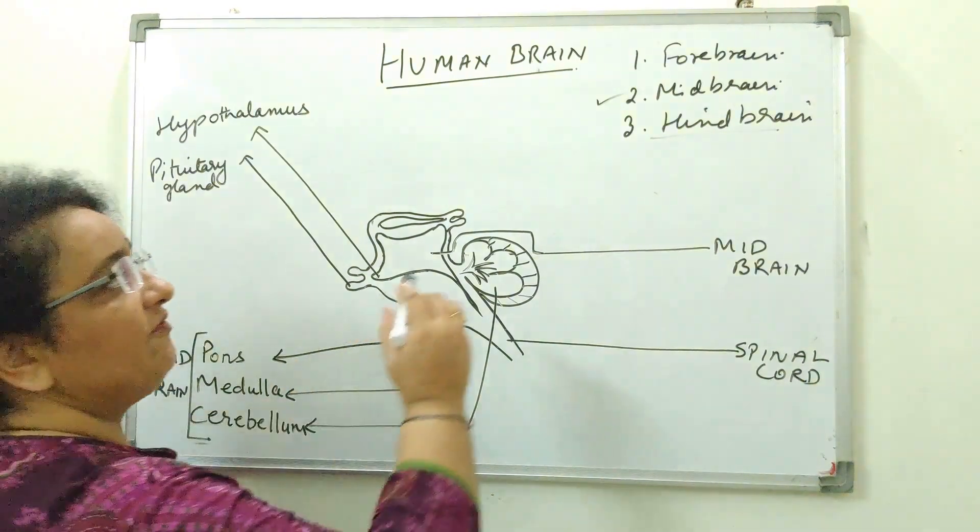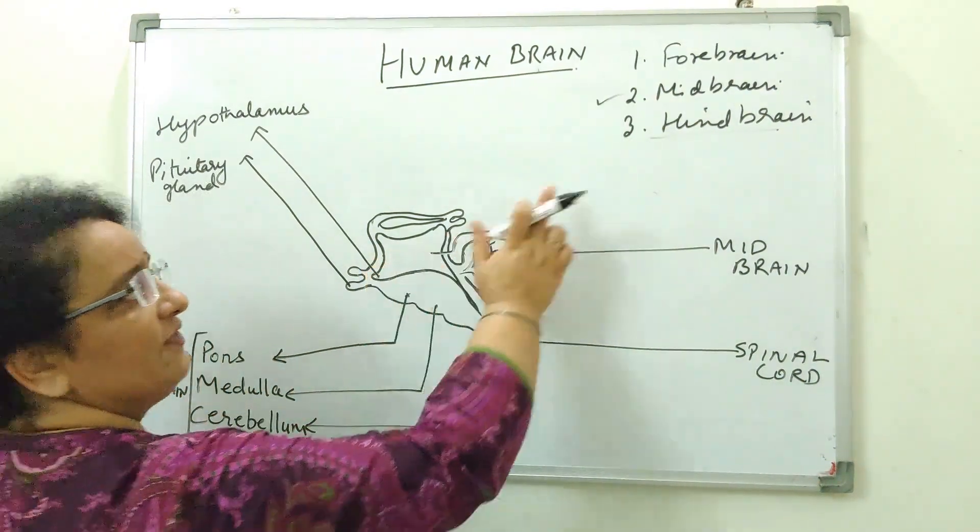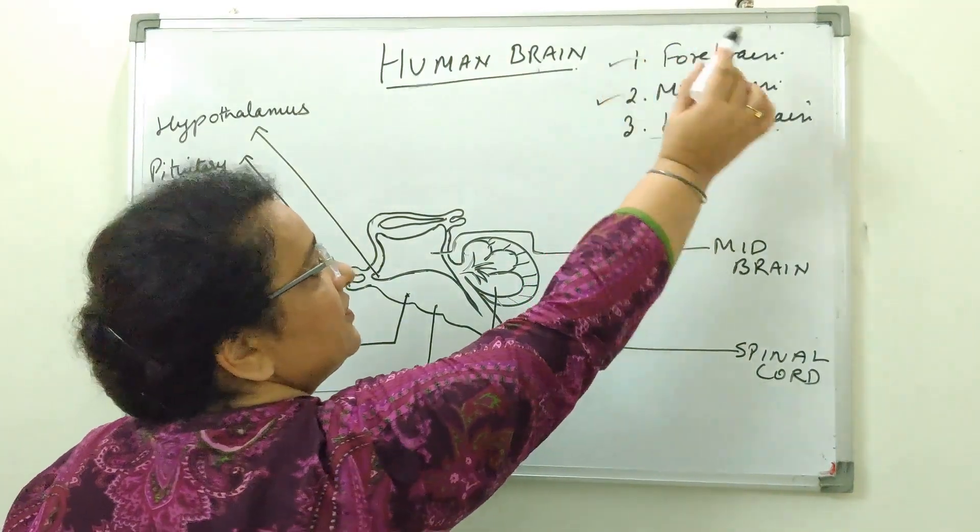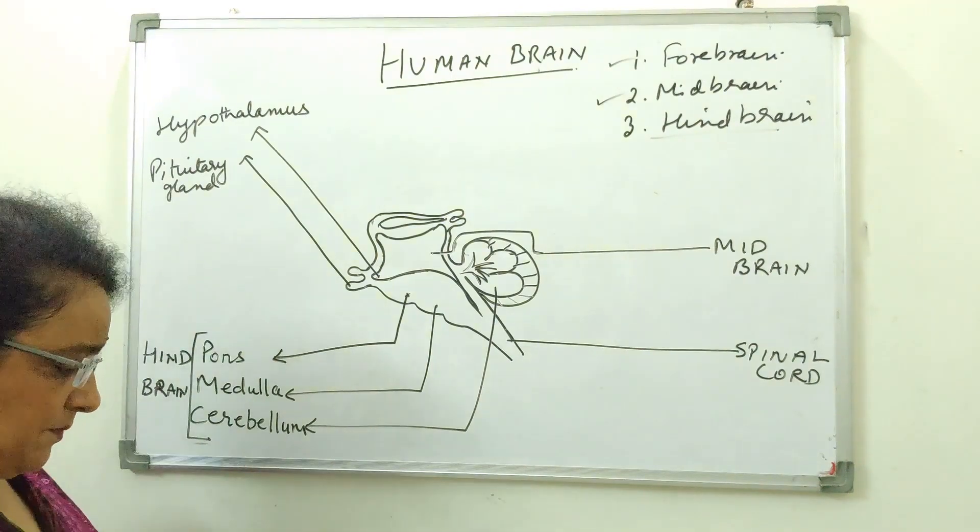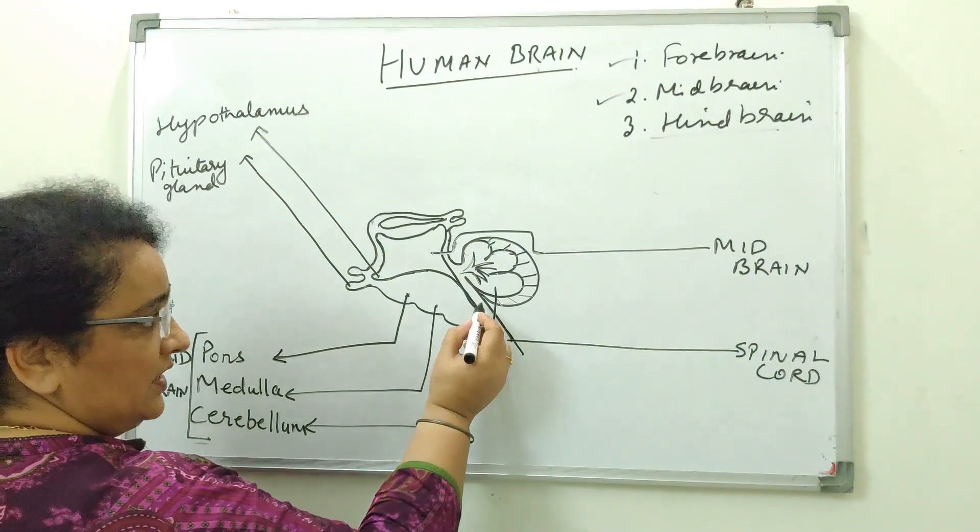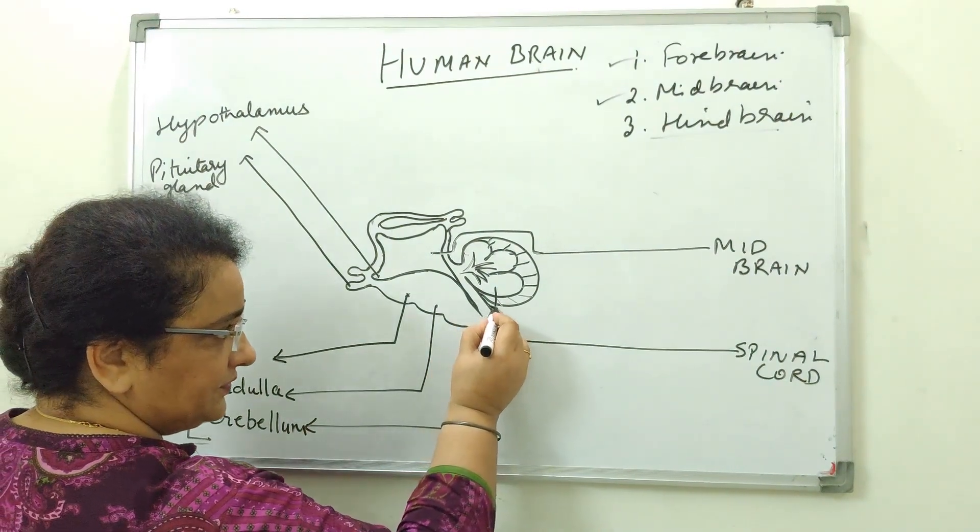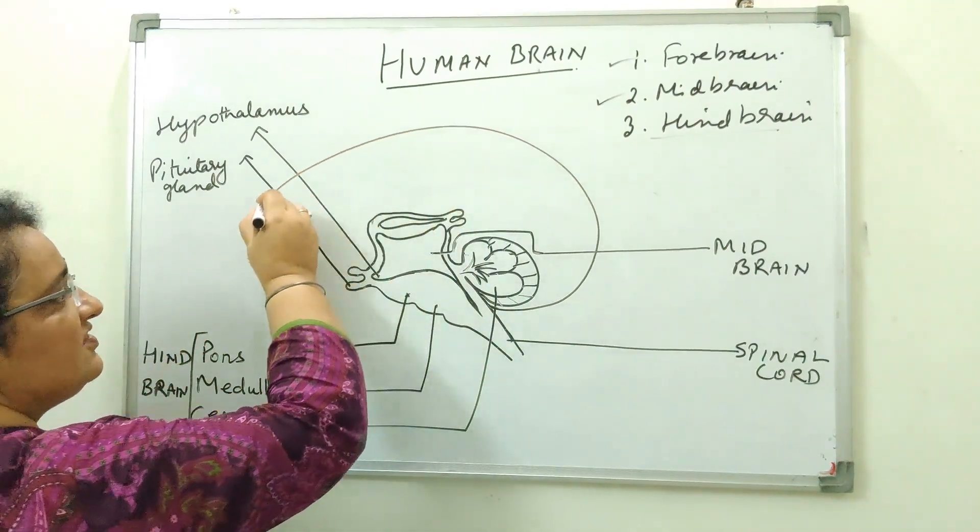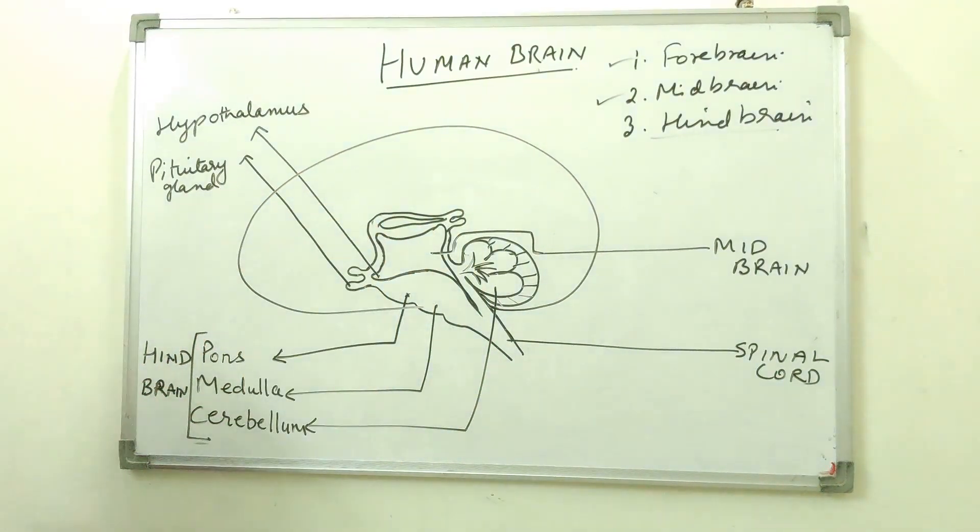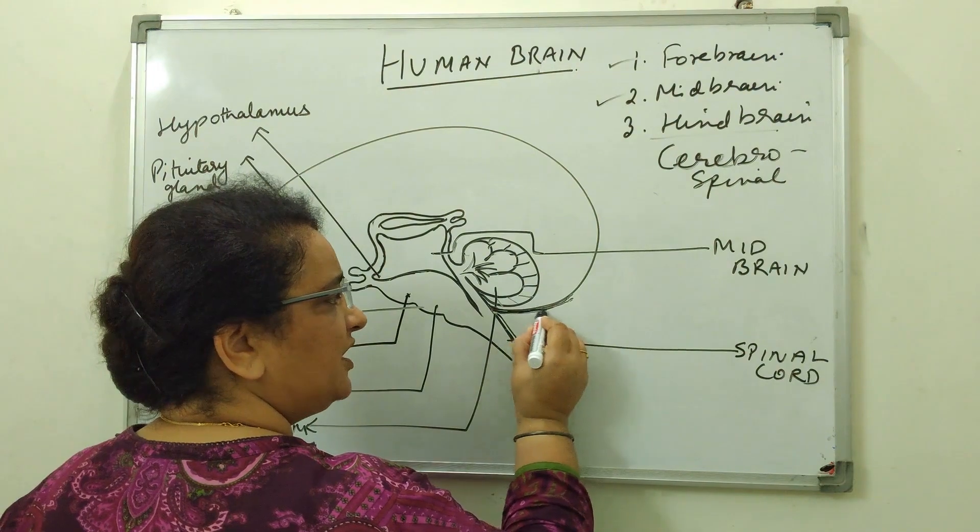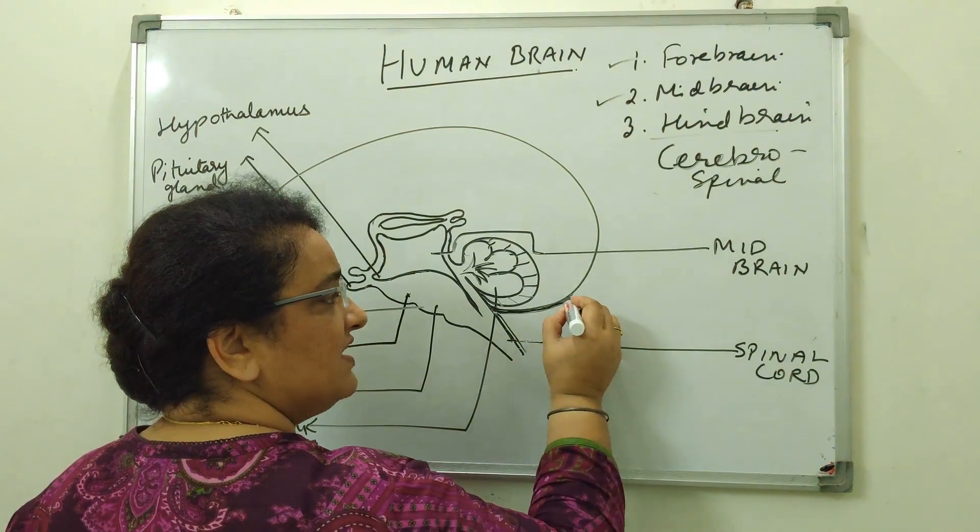Now coming to, we have drawn midbrain, we have drawn hindbrain, it consists of three parts. Now we will come to the forebrain. How to complete this, now you see, just below here, start drawing this large structure like this. This is the largest part of the brain, that is forebrain.